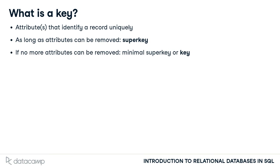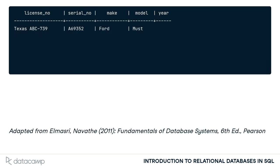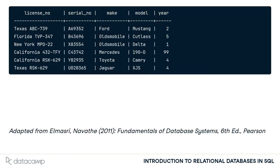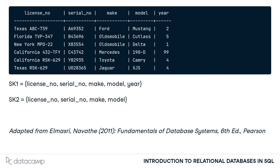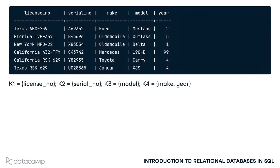Let's look at an example. Here's an example that I found in a textbook on database systems. The table shows six different cars, so the combination of all attributes is a super key. If we remove the year attribute from the super key, the six records are still unique, so it's still a super key. Actually, there are a lot of possible super keys in this example. However, there are only four minimal super keys: license number, serial number, and model, as well as the combination of make and year.